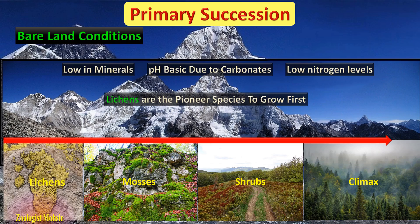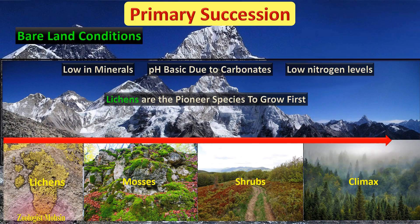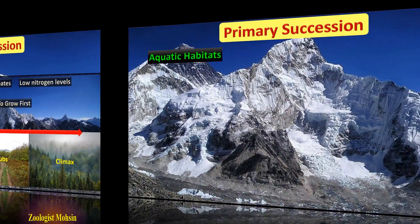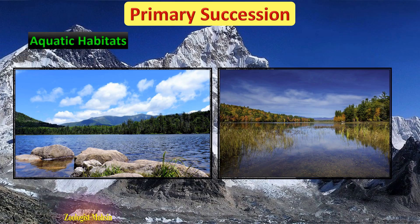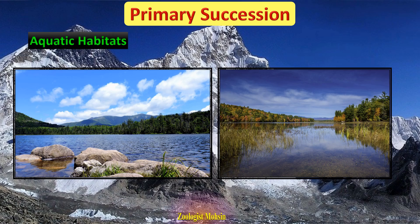Climax communities remain stable until another disturbance occurs and the cycle may start again. The timeline for primary succession varies based on conditions — it may take centuries to reach a climax community. Animal species also come and live depending upon the types of food they eat and the kind of shelter available, so plant and animal communities develop side by side. Remember that primary succession also occurs in aquatic habitats like ponds and lakes if they are newly formed. The basic difference is that algae grow first in wet habitats, then lichens.